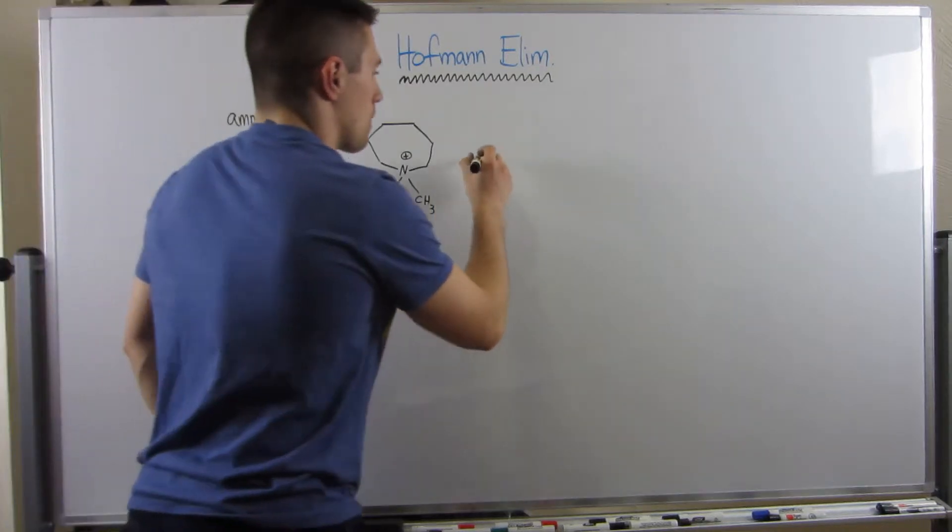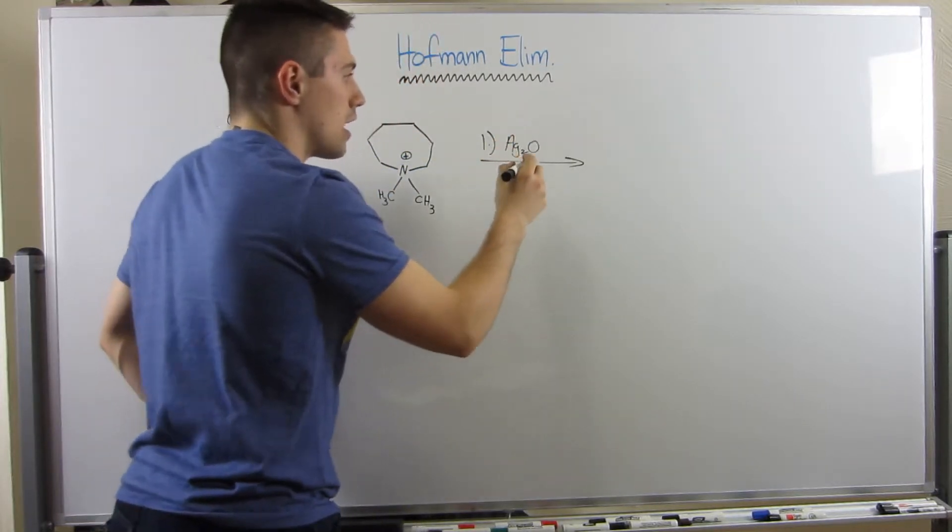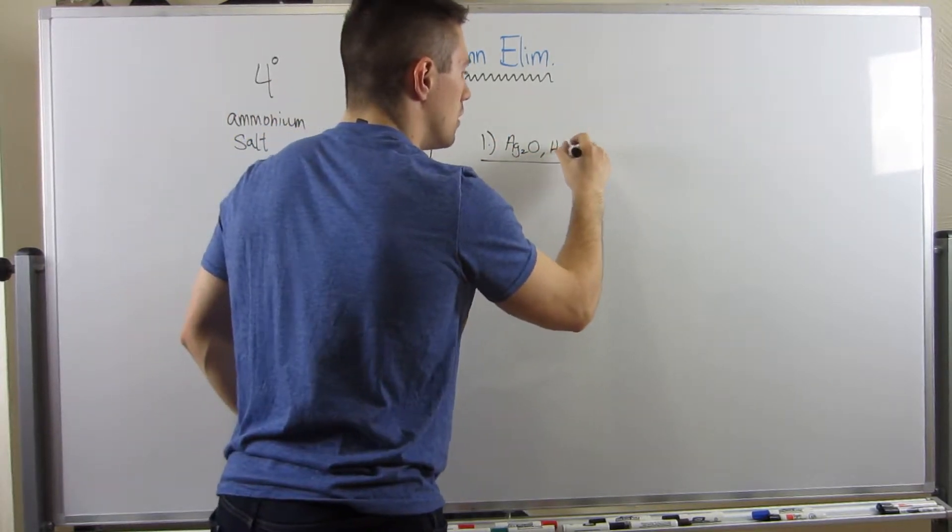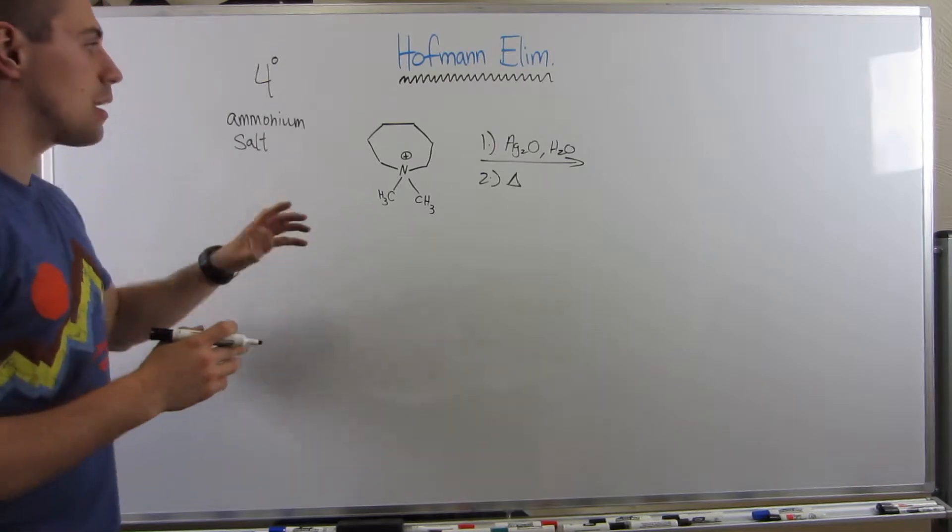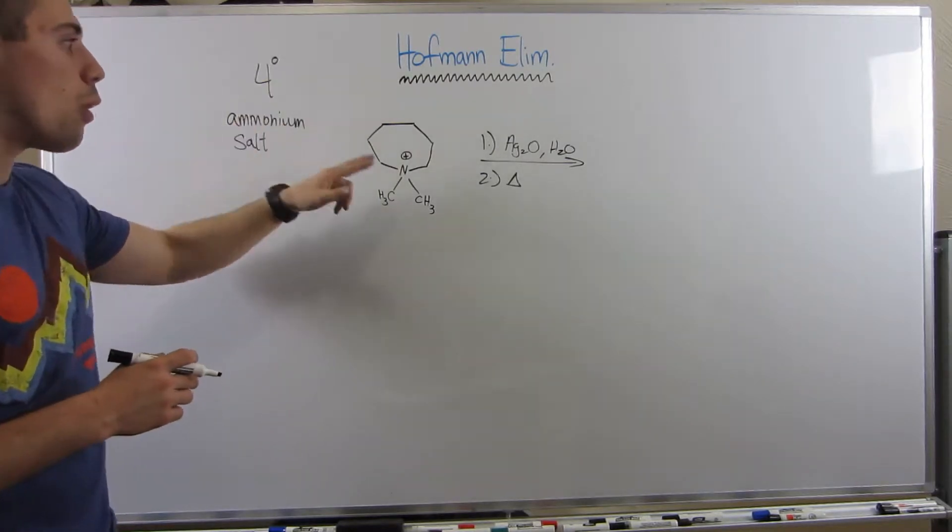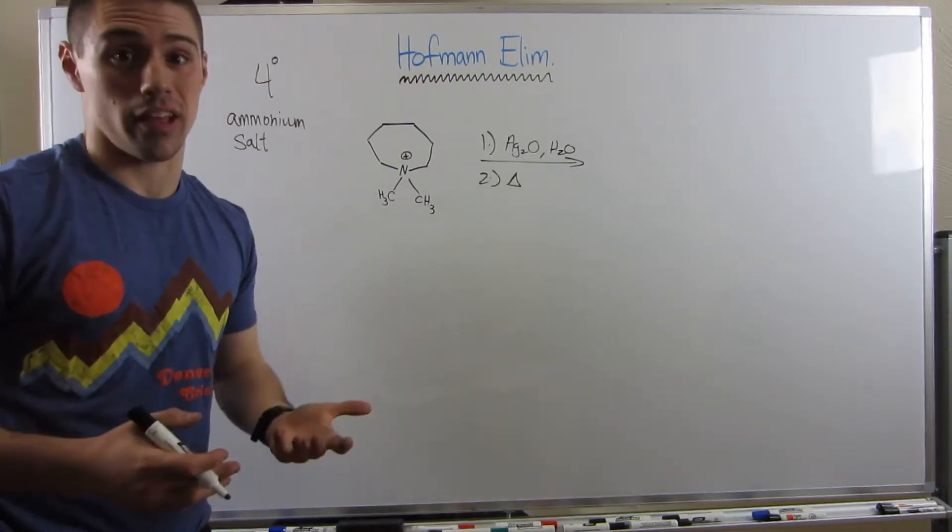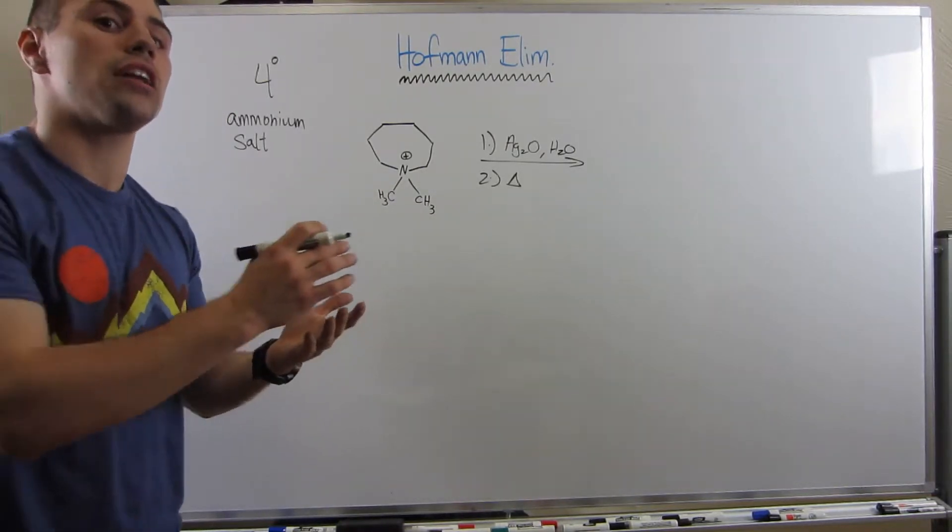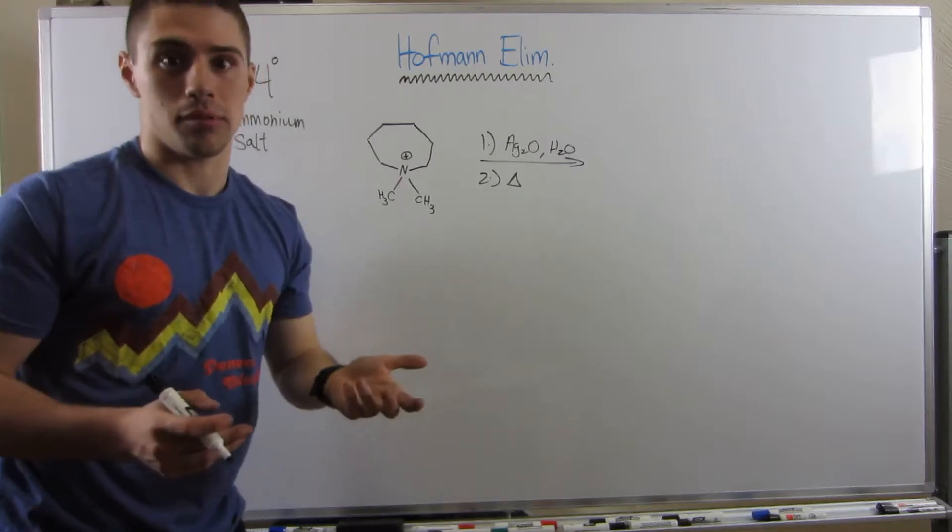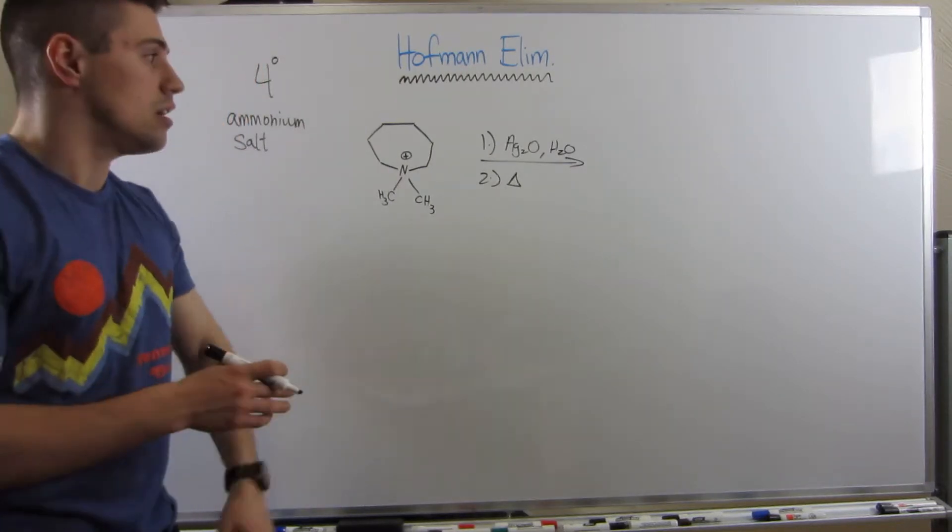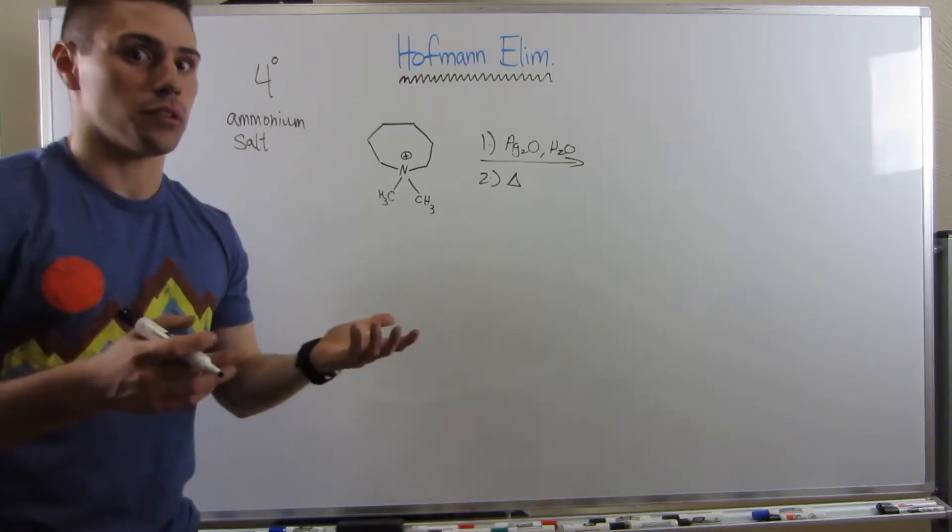Okay, if you guys see the reagents, silver oxide with water paired with some heat, here's kind of the deal. Anytime you have this ammonium salt, this quaternary amine, there's no way of eliminating that positive charge. It's stuck there. However, this is a nice way to do an elimination reaction, and more specifically what we would call a Hofmann elimination in the world of amines.